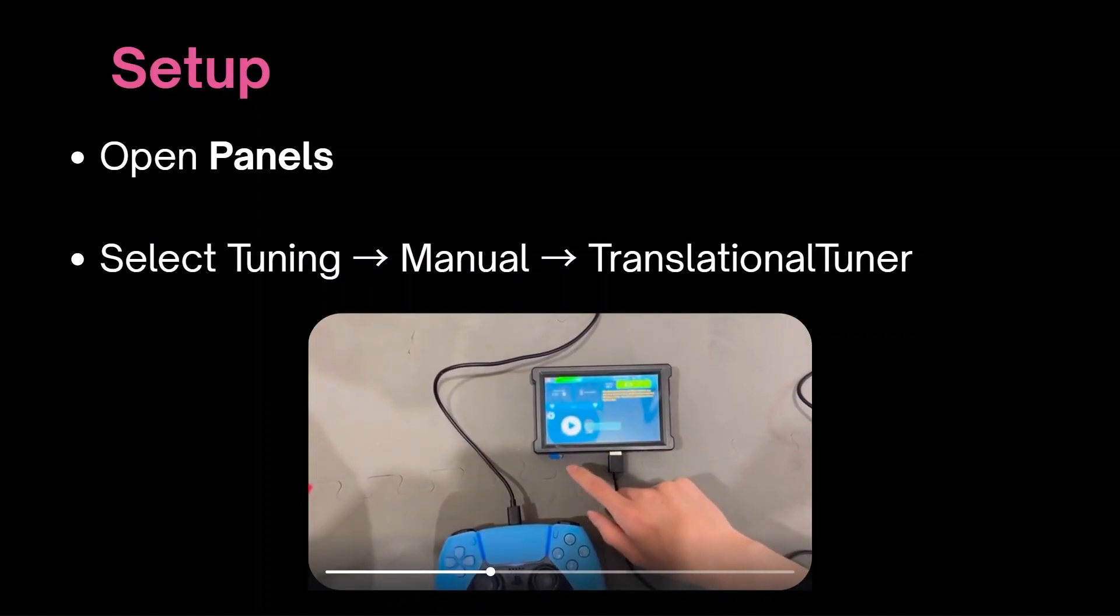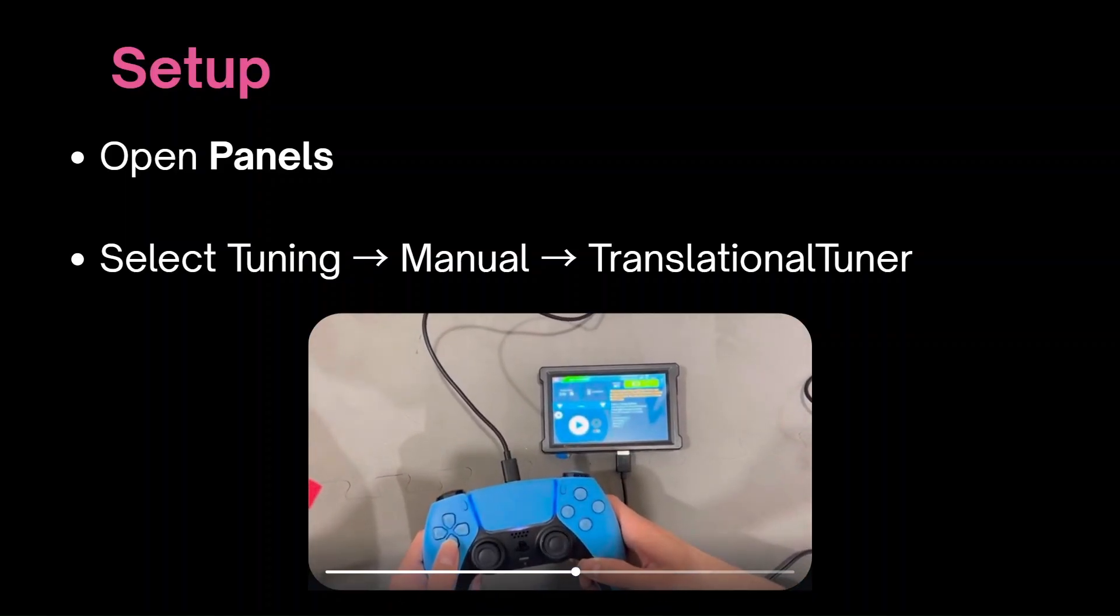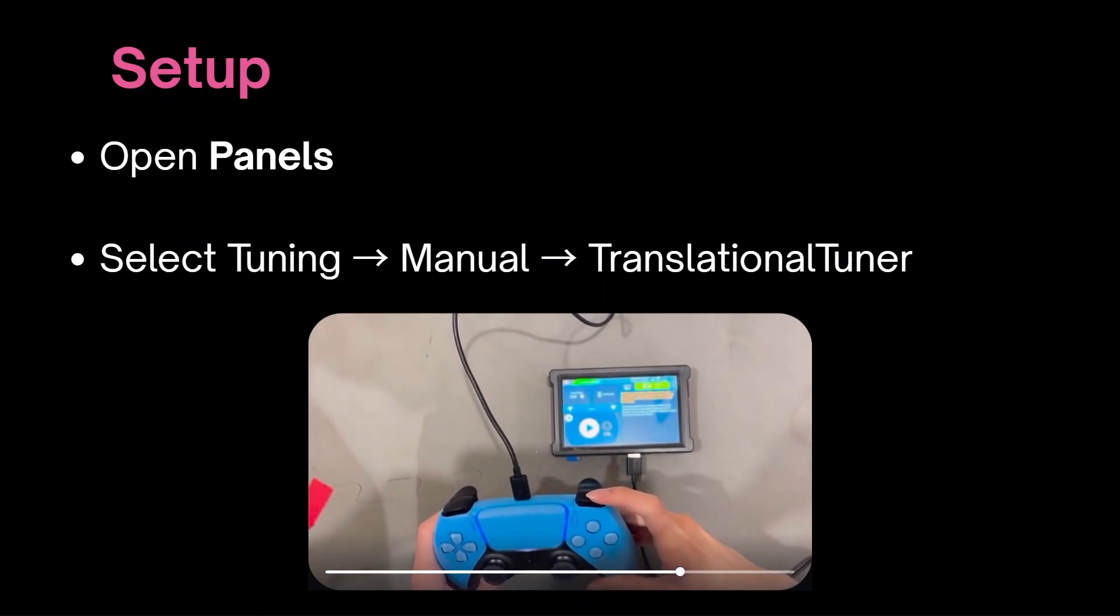Select the tuning op mode and follow the instructions on the telemetry with your gamepad to go to the manual folder, then select the translational tuner op mode.